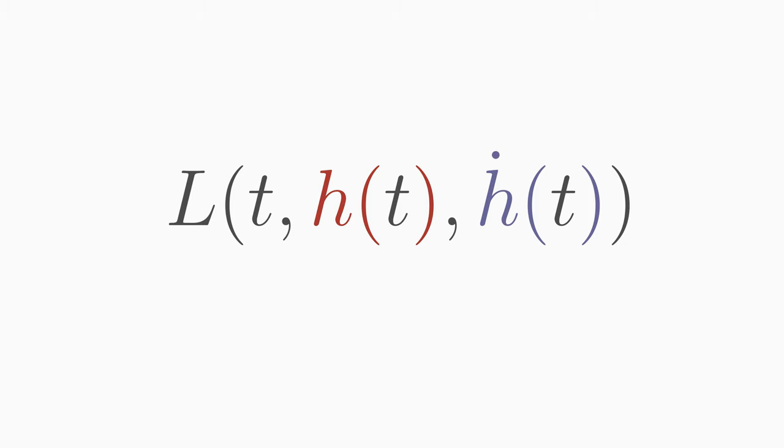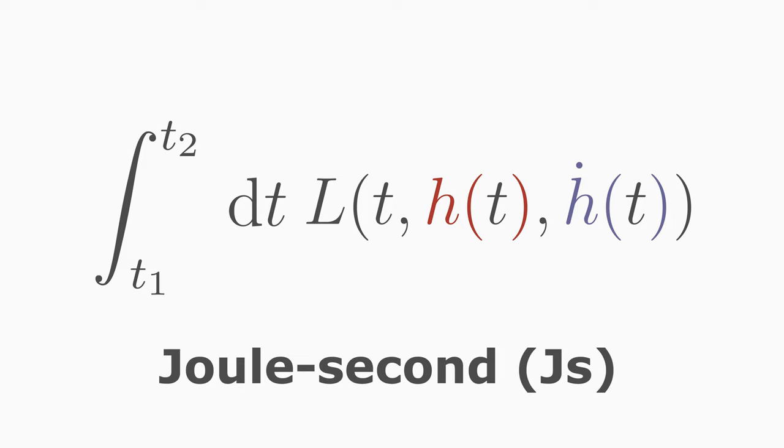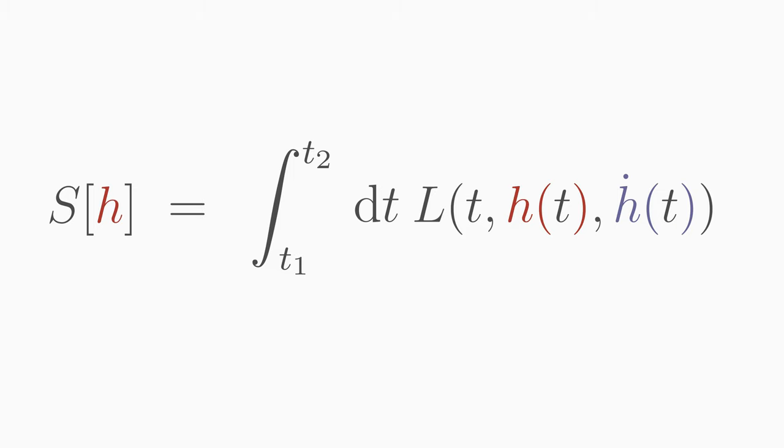If we integrate the Lagrange function over the time t between t1 and t2, we get a quantity that has the unit joule seconds. This is exactly the action we need. Thus we can calculate concretely the value of the action for each possible path h, if we specify the Lagrange function.